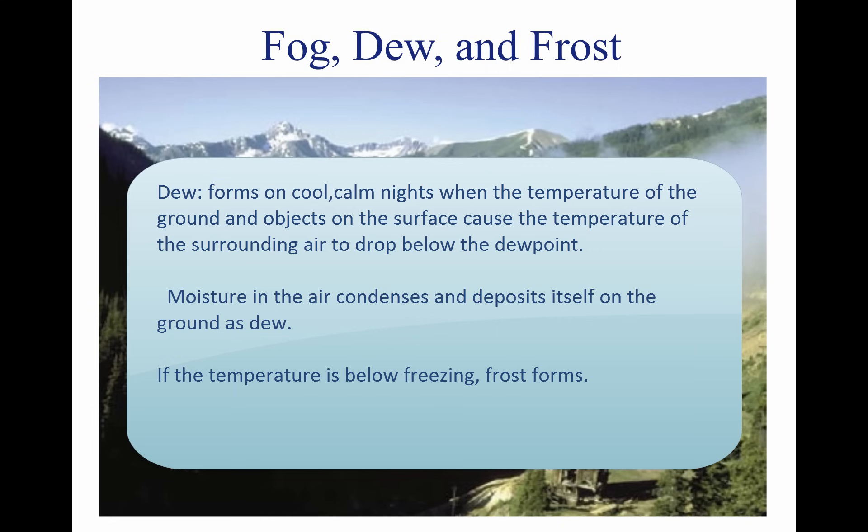On cool, calm nights, the temperature of the ground and objects on the surface can cause temperatures of the surrounding air to drop below the dew point. When this occurs, the moisture in the air condenses and deposits itself on the ground, buildings, and other objects like cars and aircraft. This moisture is known as dew and sometimes can be seen on grass in the morning. If the temperature is below freezing, the moisture is deposited in the form of frost.